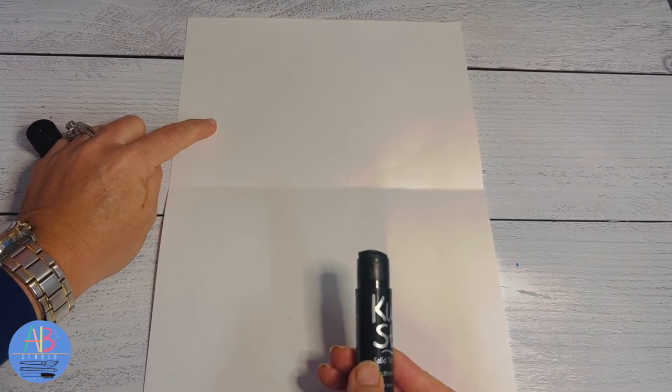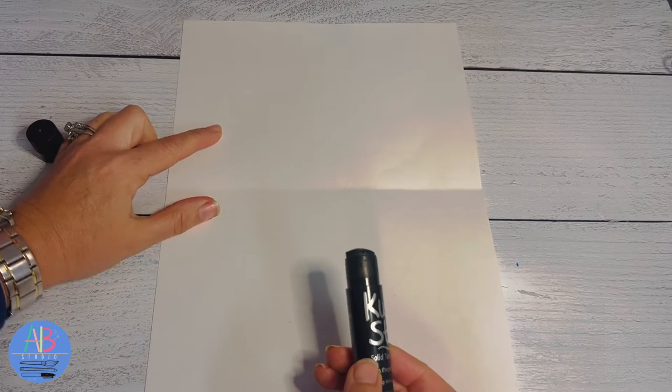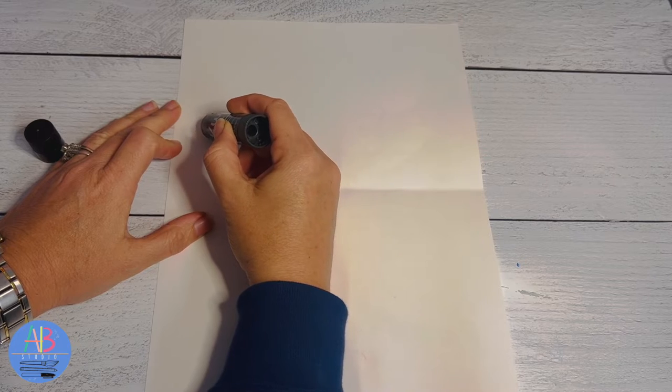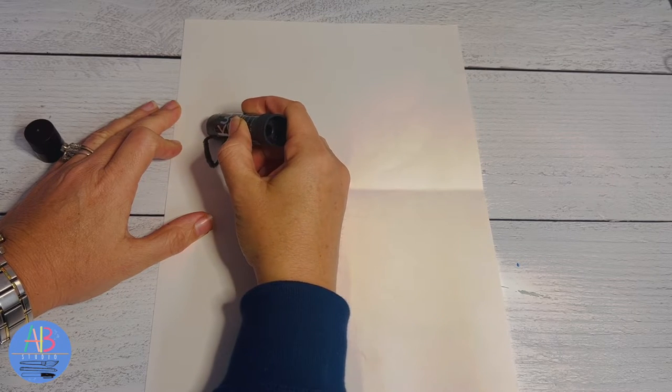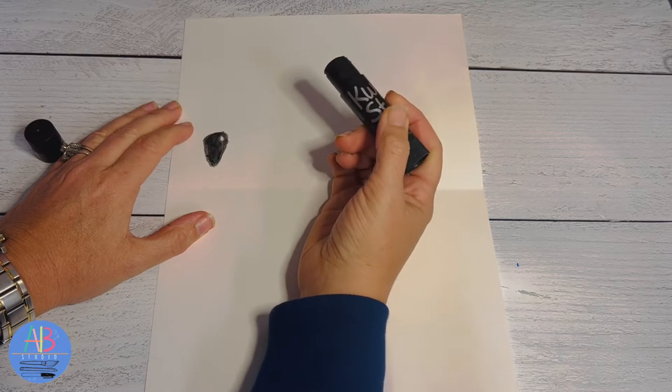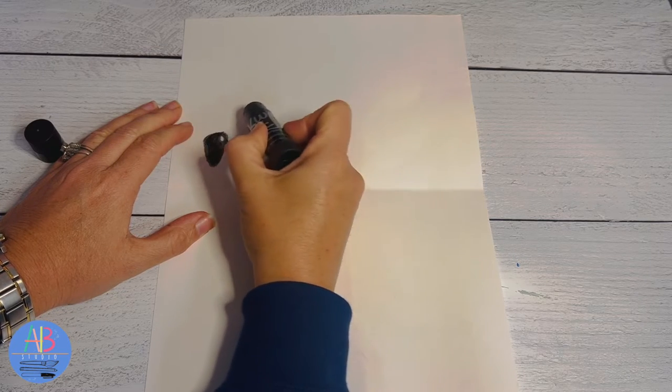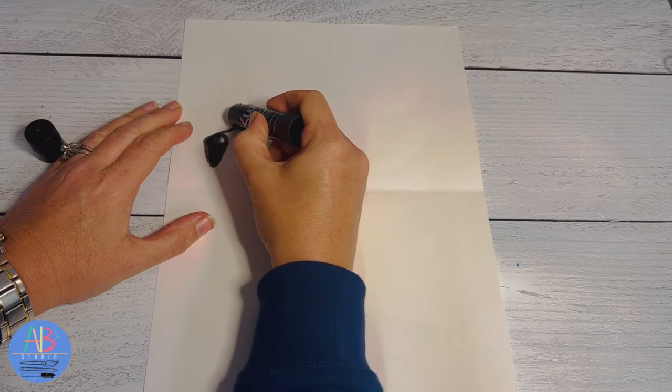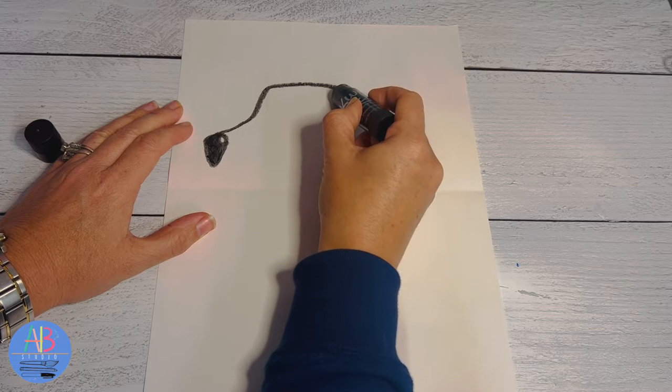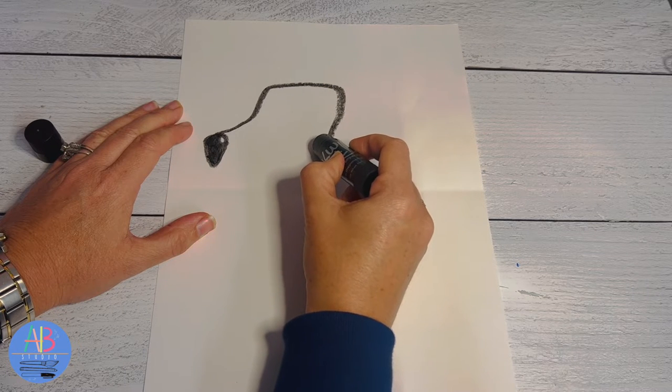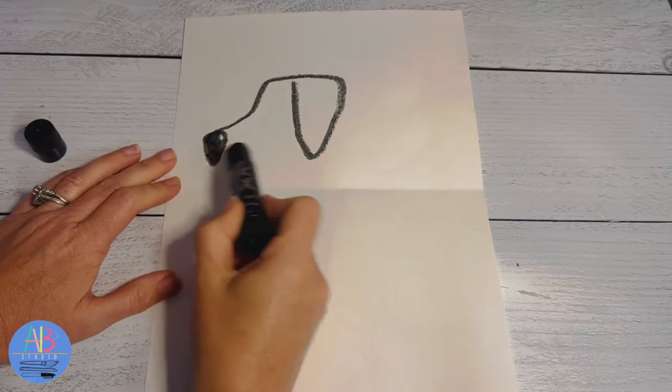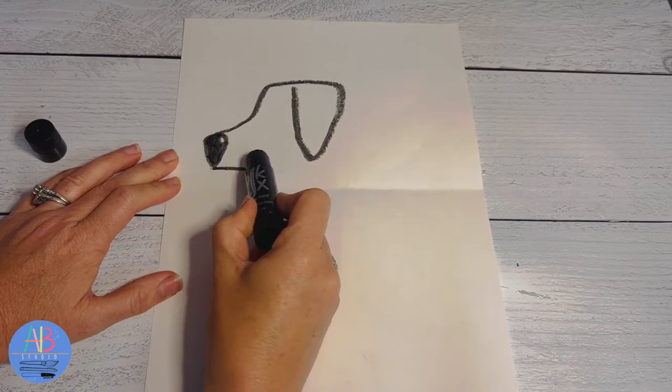So again, there's my fold. We're going to start above the fold kind of on the left side with his nose and it's like an upside down triangle. Now, I always leave a little corner because we're going to color in the nose as a highlight. Coming off the nose we're going to start up towards his head, and then we're going to make a curve down because this is going to be his ear.